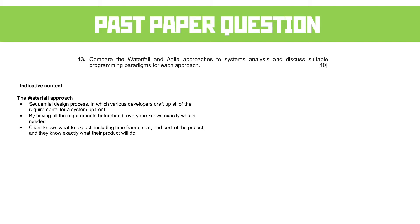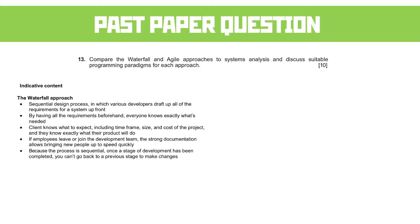We can more straightforwardly allocate time, effort, and costs. If employees leave or join the development team, the strong documentation allows bringing people up to speed very quickly — you just point them to the part of the plan they're working on. Because the process is sequential, once a stage of development has been completed you can't go back to a previous one to make changes; if you had to go back due to a major problem, you'd have to work through all the stages again.